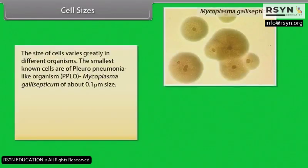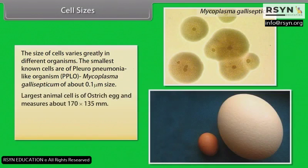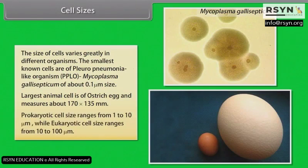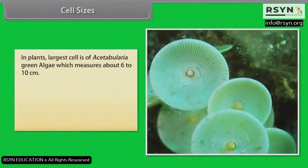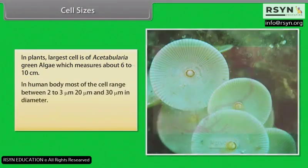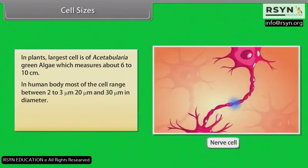The size of cells varies greatly in different organisms. The smallest known cells are those of pleuro-pneumonia-like organisms, that is PPLO — Mycoplasma gallisepticum — of about 0.1 micrometer in size. The largest animal cell is the ostrich egg, measuring about 170 by 135 millimeters. Prokaryotic cell size ranges from 1 to 10 micrometers, while eukaryotic cell size ranges from 10 to 100 micrometers. In plants, the largest cell is that of Acetabularia, a green alga, which measures about 6 to 10 centimeters. In the human body, most cells range between 2 to 3 micrometers, 20 micrometers, and 30 micrometers in diameter.